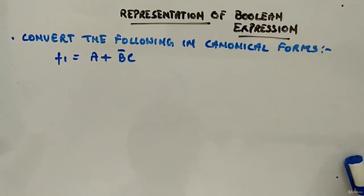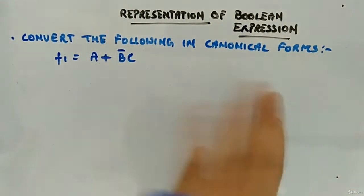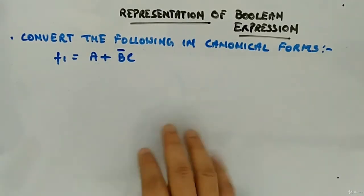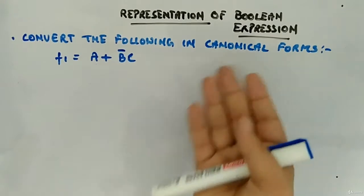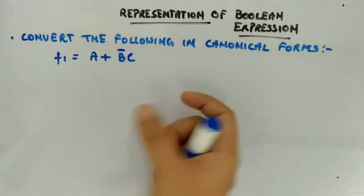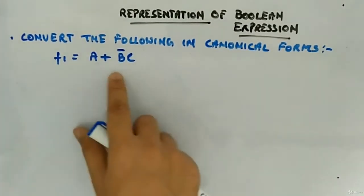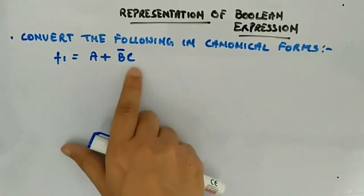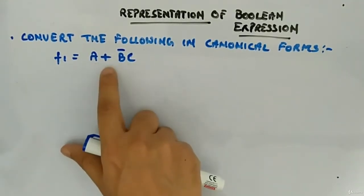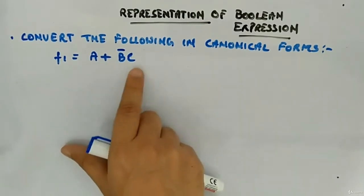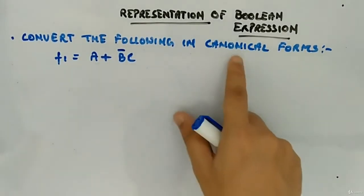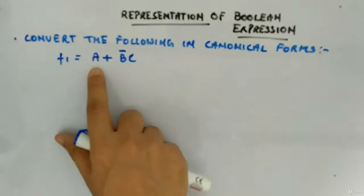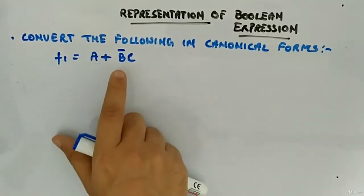Okay, now let's look at an example where we will convert the non-canonical form or normal form to canonical form, standard form. Some random expression is given to you: F1 is equal to A plus B bar C. Now it's a sum of product. You can see this is a product term, this is a product term, and sum is there between. So sum of product term, but it is not in canonical form because each term is not having all the variables.